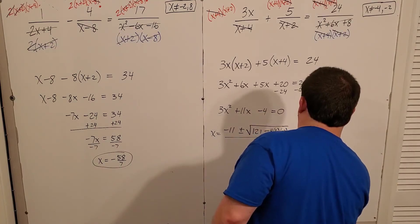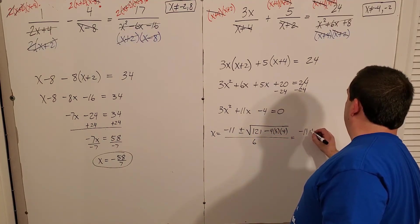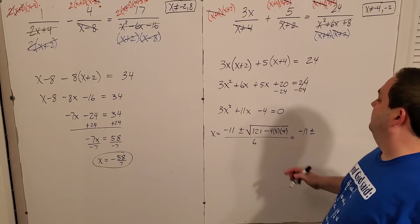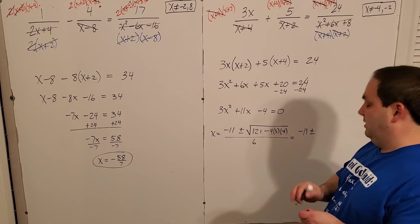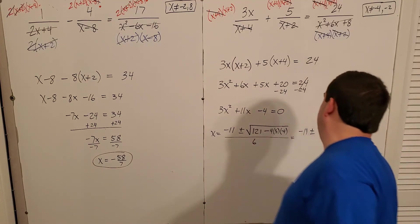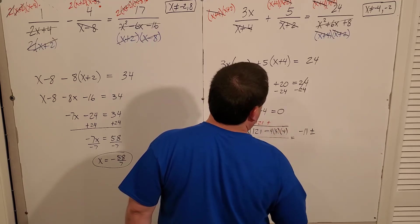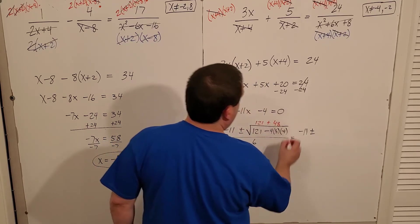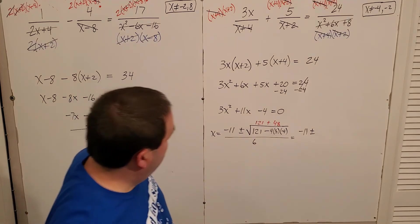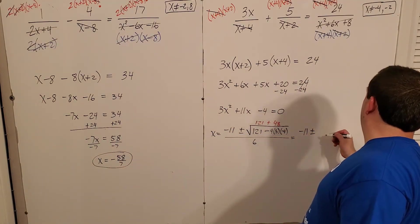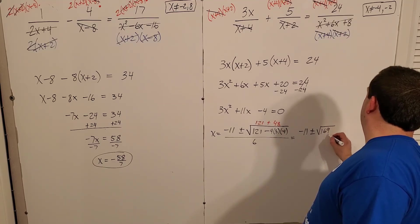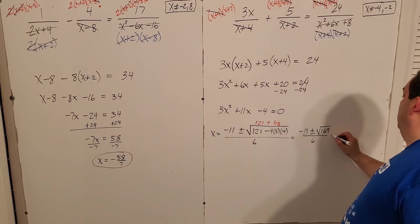So then I've got negative 11 plus or minus. Double negative here is going to make this plus, right? So it's going to be 121 plus 48. So square root of 169 over 6, which is landing me with a negative 11 plus or minus 13 over 6.